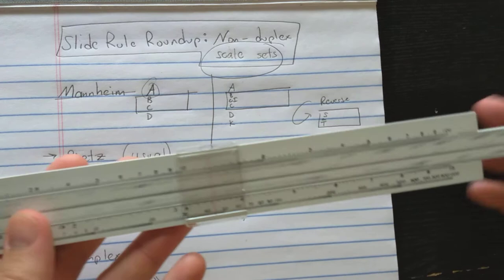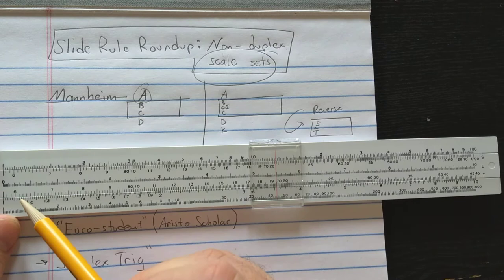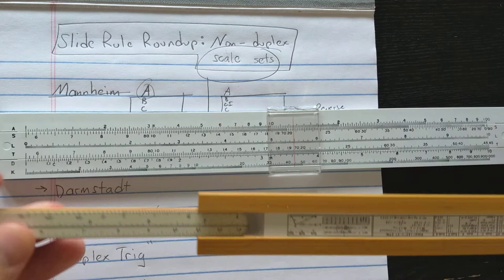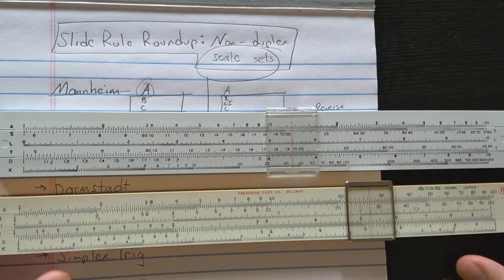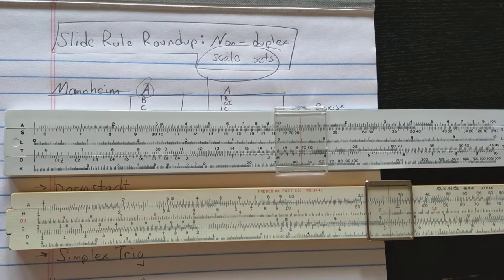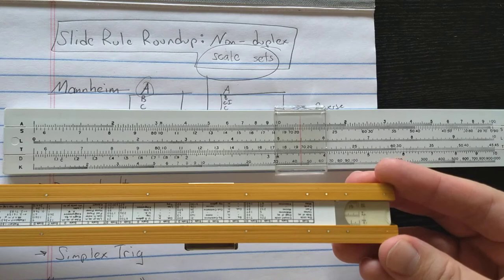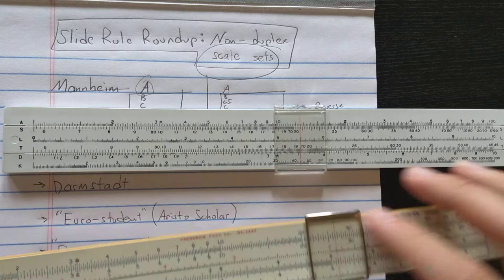On this slide rule you have to invert the slide in order to use those scales. And you can see on a lot of Mannheim type slide rules the S scale is keyed to the A scale so they're next to each other. Notice this slide rule contains hairlines on the back for using the S, L, and T scale from the back. Actually it includes a line on both sides. So you could use the trigonometry scales or the log scale from the back without having to invert the slide.